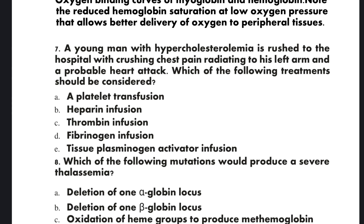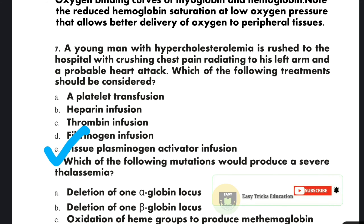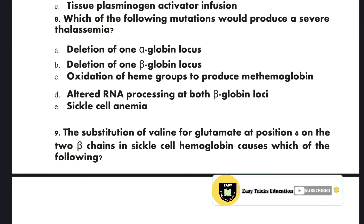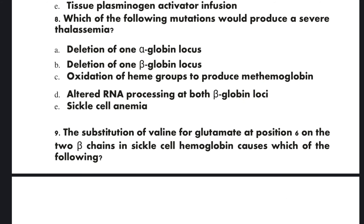Question 7 and 8: A young man with hypercholesterolemia is rushed to the hospital with crushing chest pain radiating to his left arm and a probable heart attack. Which of the following mutations would produce a severe thalassemia? A: deletion of one alpha globin locus, B: deletion of one beta globin locus, C: oxidation of heme groups to produce methemoglobin, D: altered RNA processing at both beta globin loci, E: sickle cell anemia. The correct option is D: altered RNA processing at both beta globin loci.